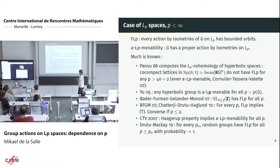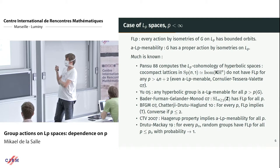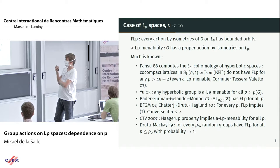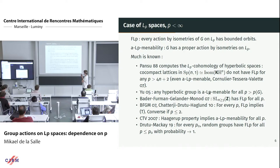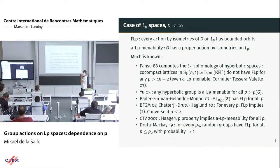Here is a brief and biased summary of what is known for actions on LP spaces. FLp means the fixed-point property: every isometric action on an LP space has a fixed point or bounded orbit. The analog of the Haagerup property is ALp-menability: there exists a proper action by isometries on an LP space. Many things have been discovered over the past several decades.